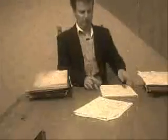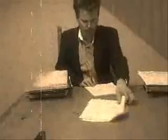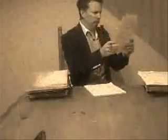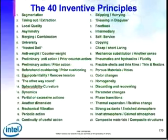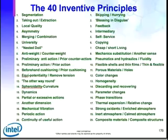Last week we started our discussion about contradictions. This week we'll continue it with engineering contradictions. As Altshuller looked through the patent databases, he discovered that regardless of which industry he reviewed, there was a finite set of solutions that people used to solve difficult problems. He classified this solution set into 40 simple principles — that's it, only 40.